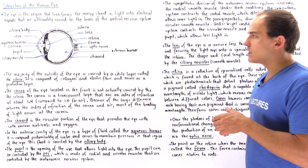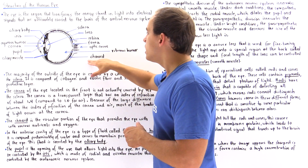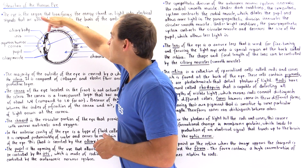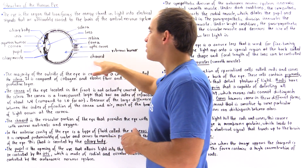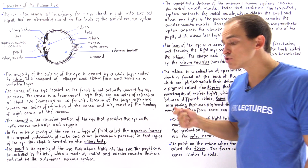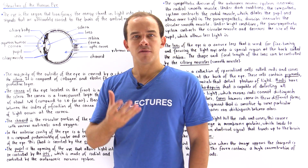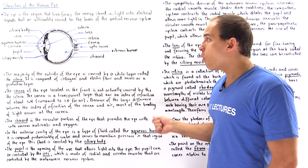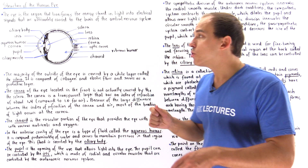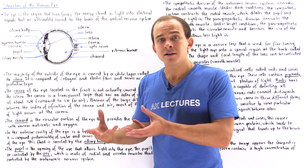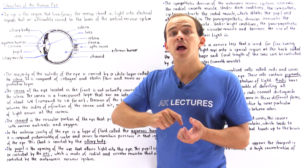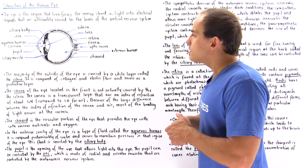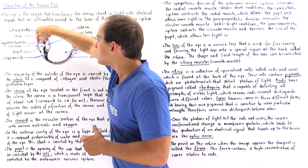The next portion is the choroid. The choroid is basically the layer below the sclera, and it contains the vascular portion of the eye — the portion that contains our connective tissue. The choroid is linked to our blood, so the blood that carries our nutrients and oxygen supplies those nutrients and oxygen to the eye via our choroid.